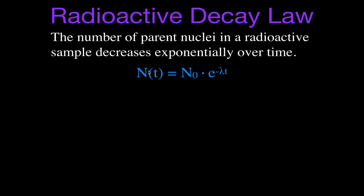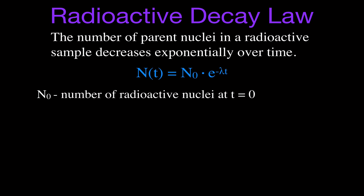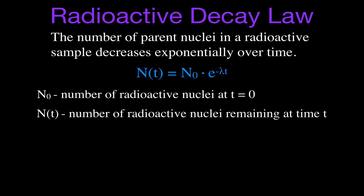This is one of the equations we use to calculate different things for radioactive decay law. Let's start with N₀ — N stands for number, and N₀ is the number of radioactive nuclei at time t equals zero. That's how many you start with. Nₜ is the number of radioactive nuclei that remain after some time t — it could be after 100,000 years, 20 seconds, a million years — how many radioactive nuclei do we have left if we started with N₀?